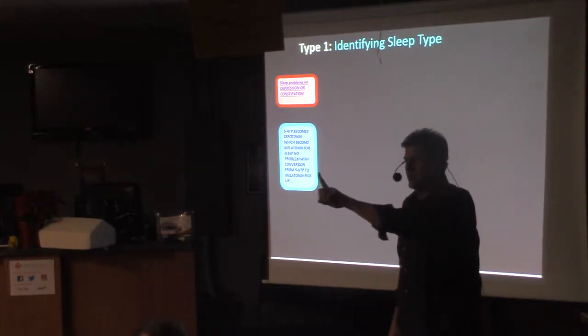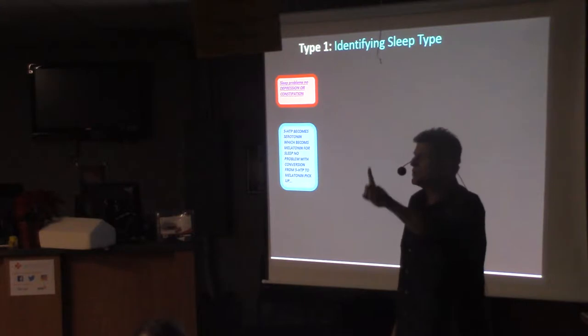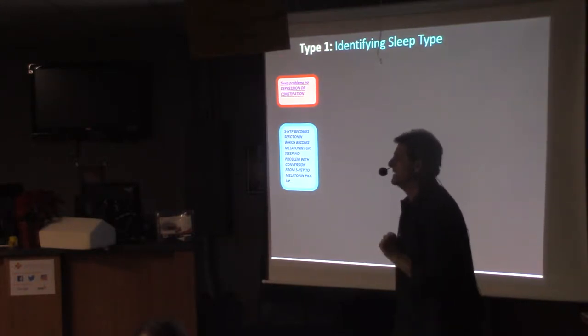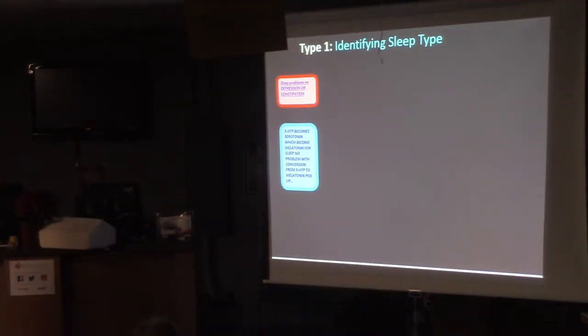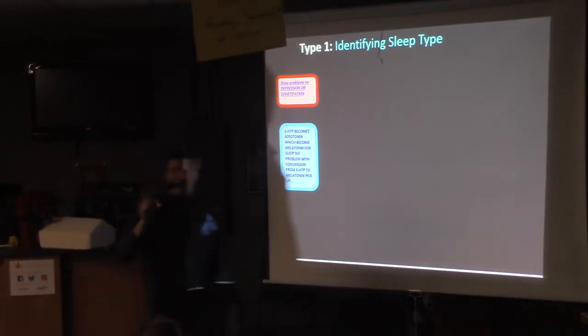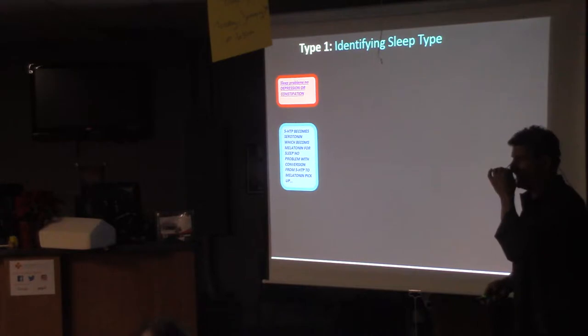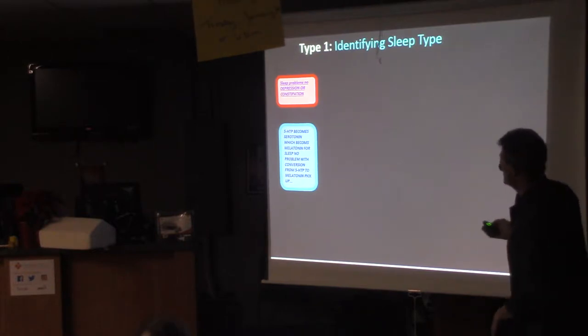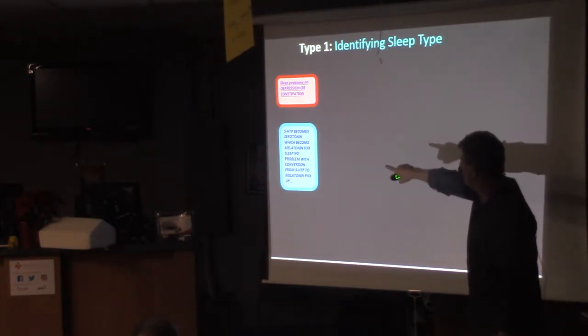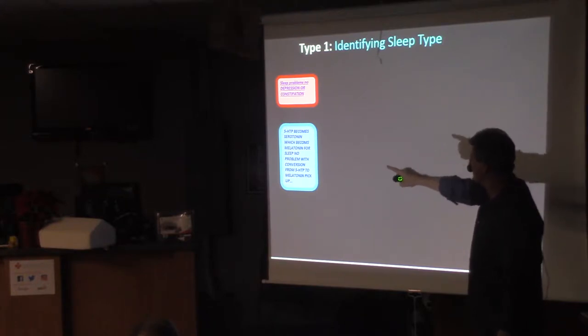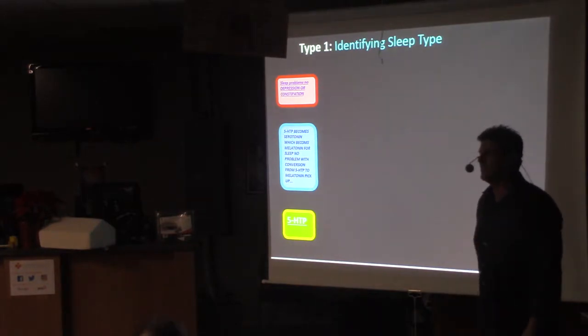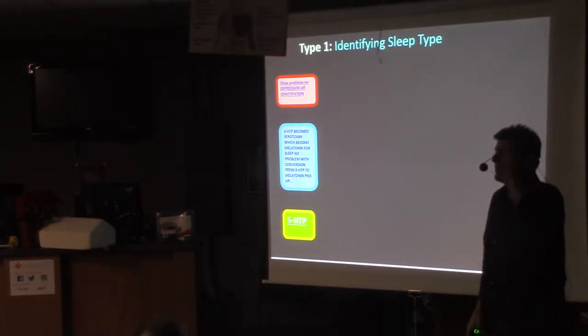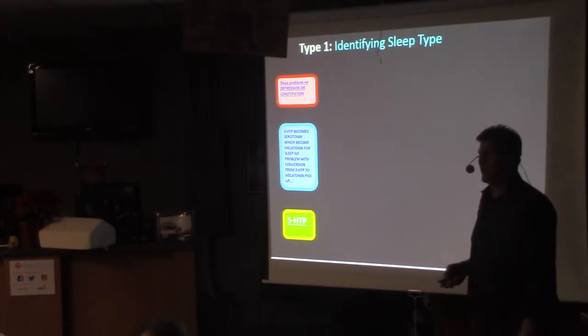One dumb person on the entire planet took an entire bottle of this stuff and died. One person on the entire planet took one bottle and died, and they took it off the market. How many people die from prescription drugs every day? And you don't hear any complaining about that. That is just devastating. So, we have to do 5-HTP, which is a metabolic breakdown product of tryptophan. So it's a little more expensive. 5-HTP becomes melatonin. If you're having trouble sleeping and you're not depressed and not constipated, that's your baby.